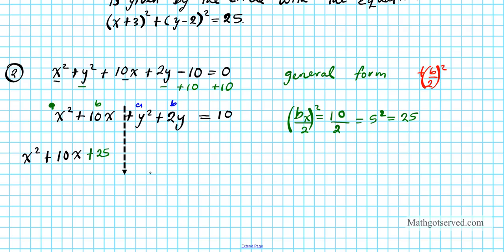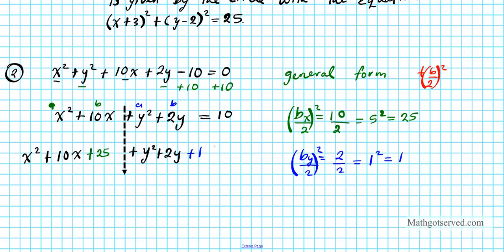We introduced two new numbers — 25 and 1 — to the left side, so to preserve equality we add them to the right side as well: equals 10 + 25 + 1. Now we have two perfect square trinomials. Using the shortcut — root the first and last terms and bring down the middle sign — in the x-world: √(x²) = x, sign is plus, √25 = 5, giving (x+5)². In the y-world: √(y²) = y, sign is plus, √1 = 1, giving (y+1)².